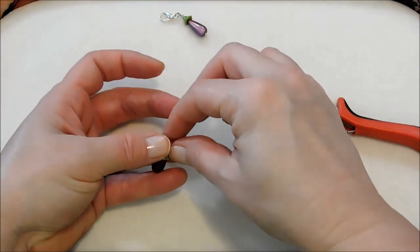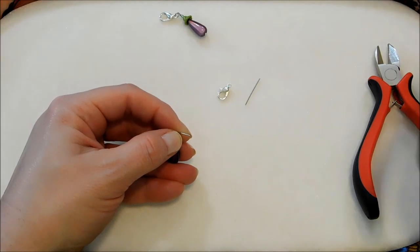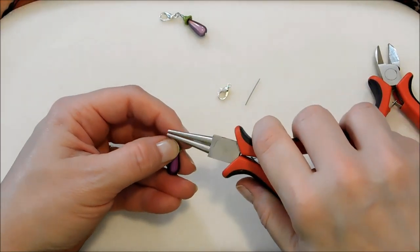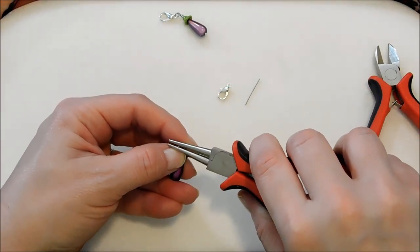Lay my excess aside because that's going to be my jump ring. I'm going to roll this into a loop with my round nose pliers.